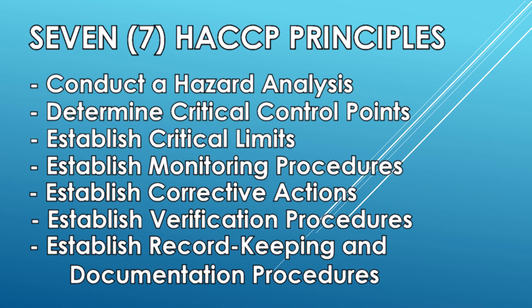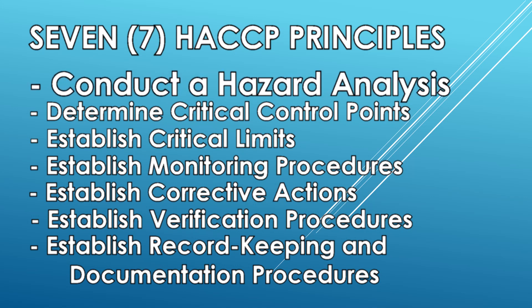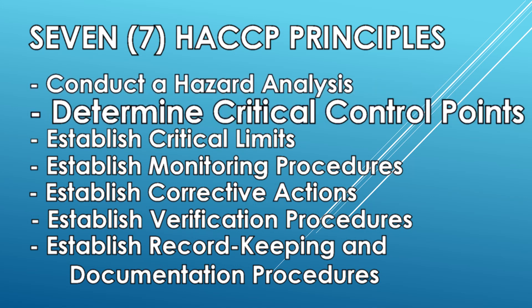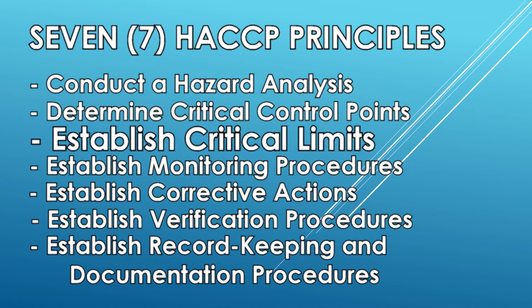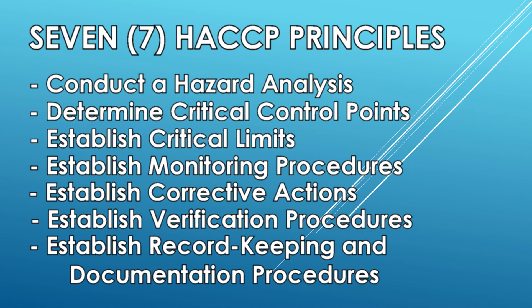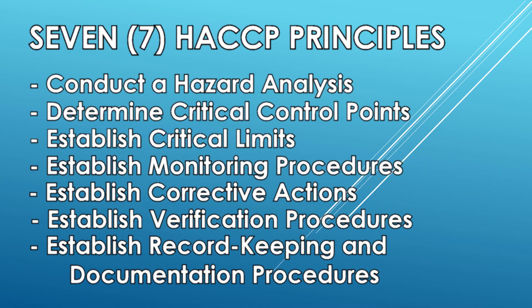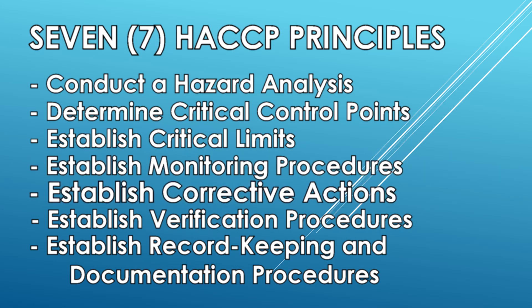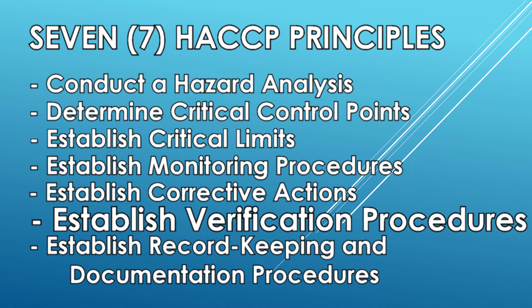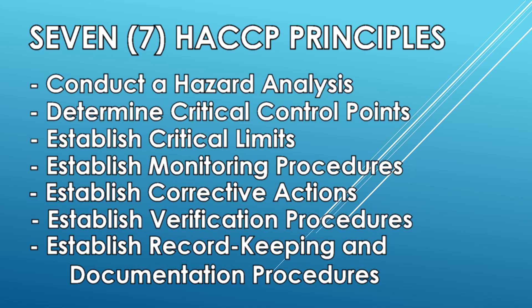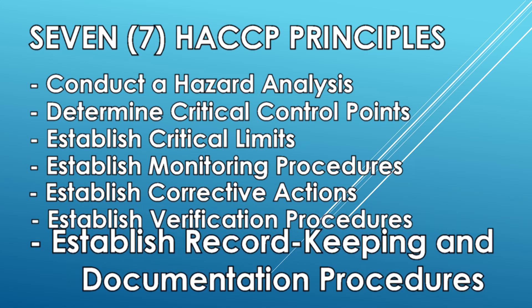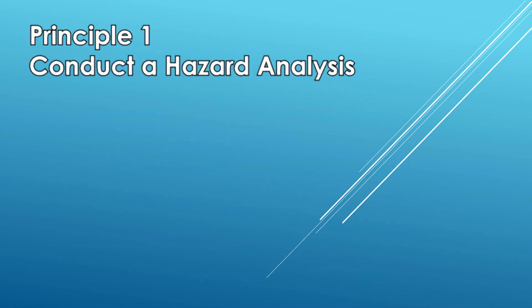The seven HACCP principles are: Conduct a hazard analysis, Determine a critical control point, Establish critical limits, Establish monitoring procedures, Establish corrective actions, Establish verification procedures, and Establish record-keeping and documentation procedures.